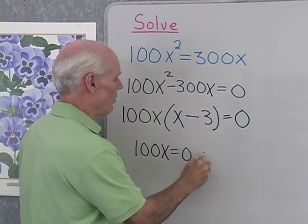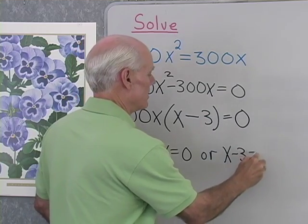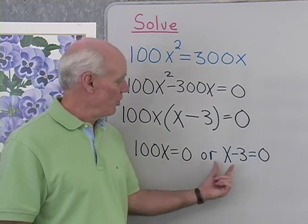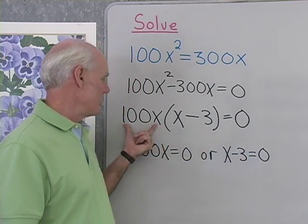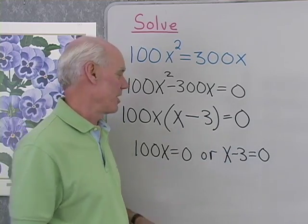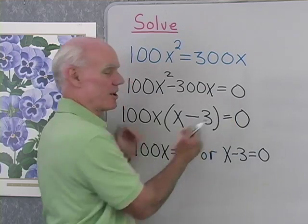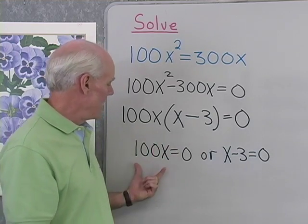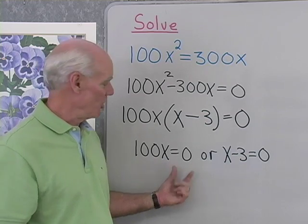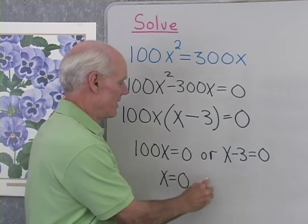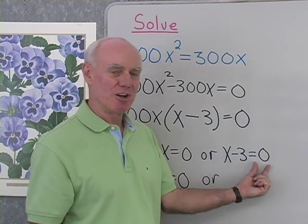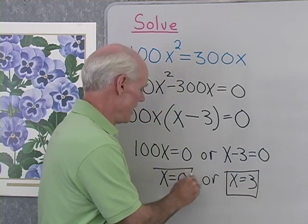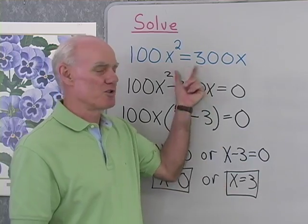I'll use the zero factor property to set each factor equal to zero: 100x equals 0, or x minus 3 equals 0. When either factor is zero, that product is zero and I get a solution. How can 100x equal zero? Only if x itself is zero. And x minus 3 equals zero when x equals 3. So I have two solutions: x equals 0 and x equals 3. Both are solutions to my original equation.